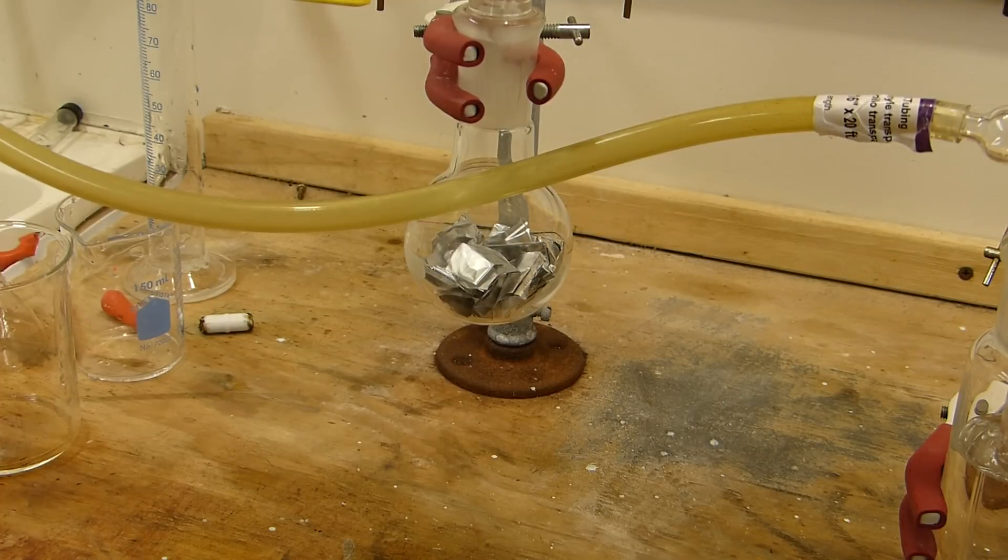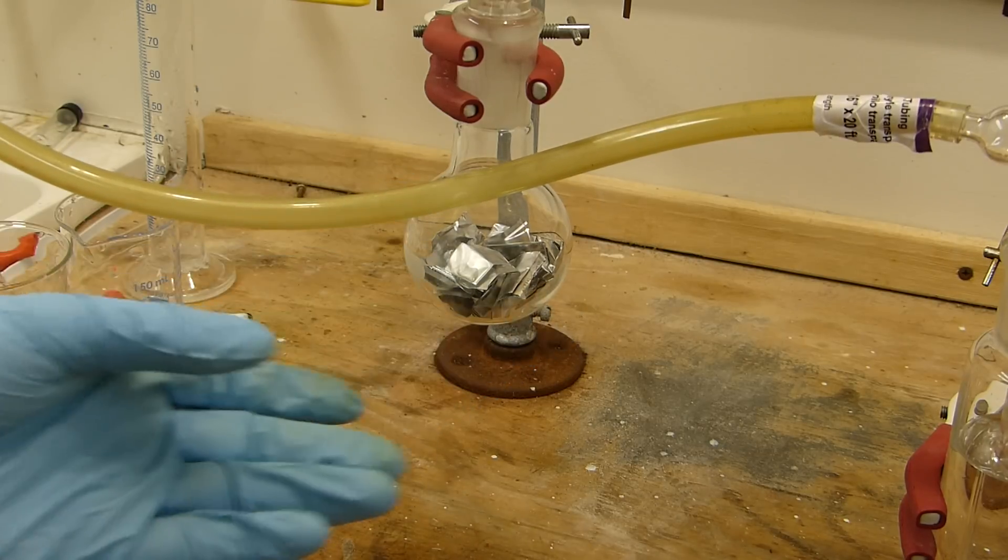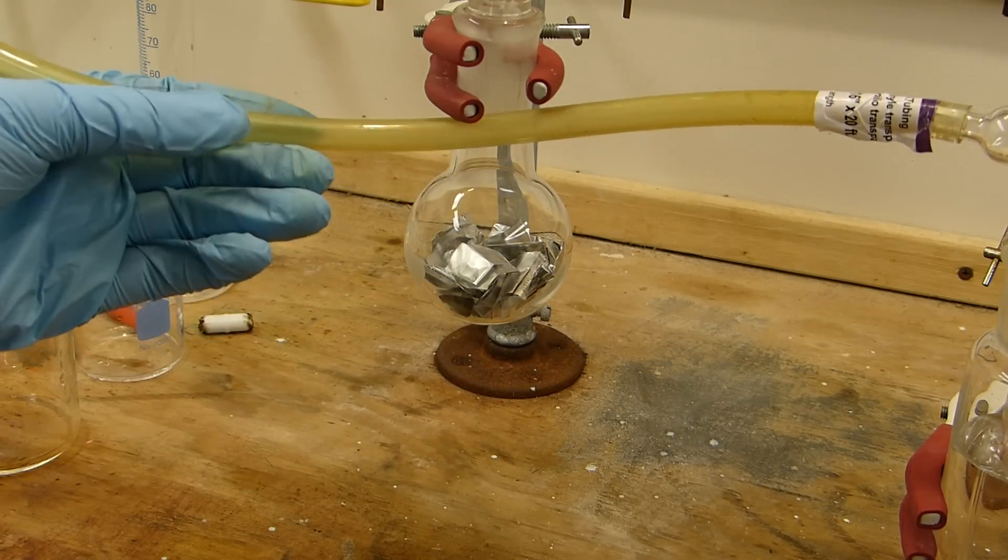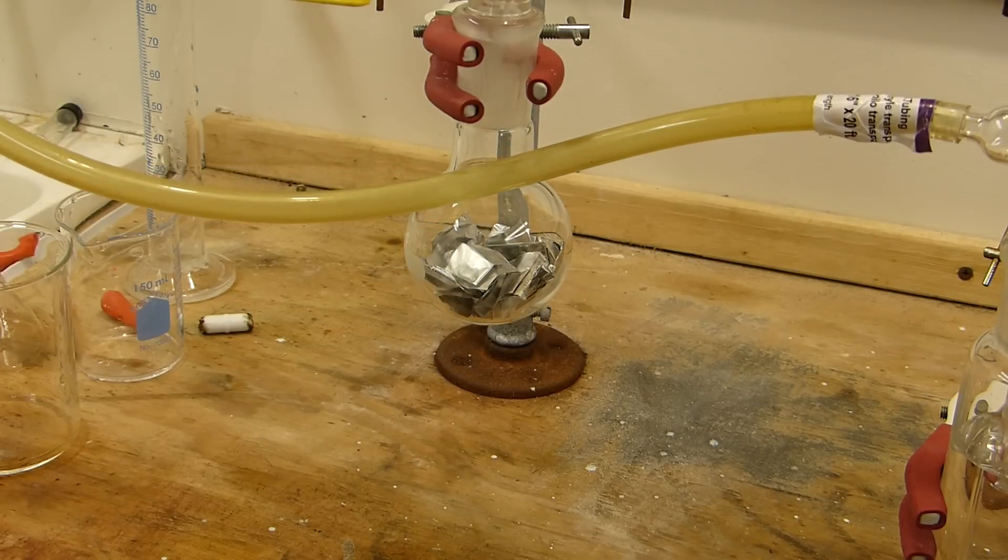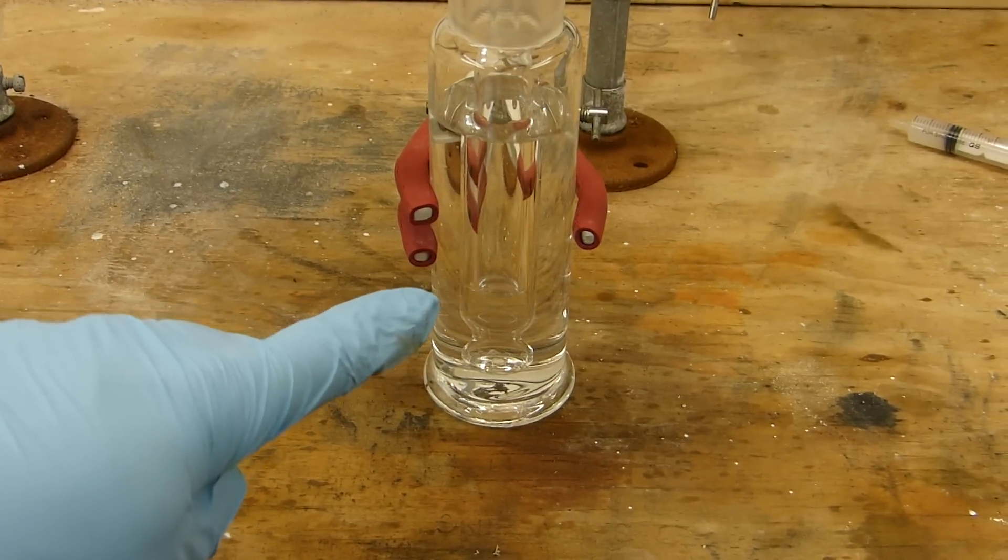This reaction also has an induction period. It takes a second for this to warm up and break through what I believe to be not only the oxide layer on the aluminum that forms spontaneously but also a polymer layer which is on the aluminum foil. But after a second or so this will get going, and you can see the gas wash bottle, we're producing some gas.